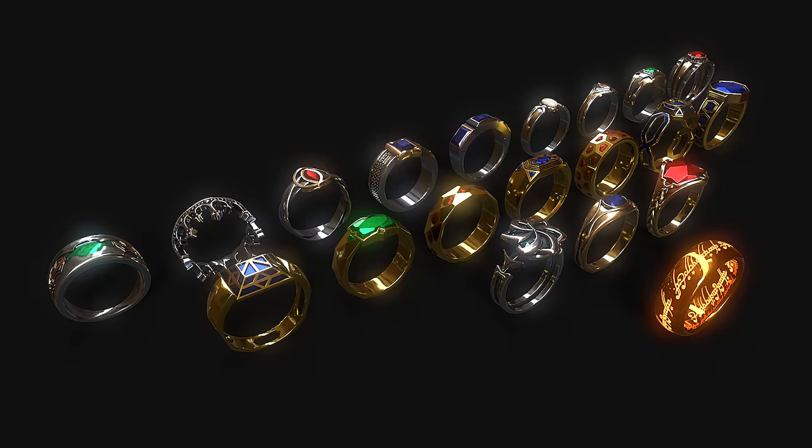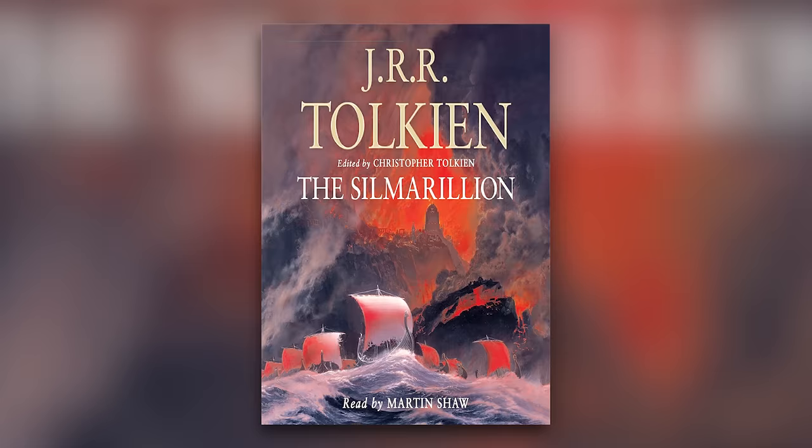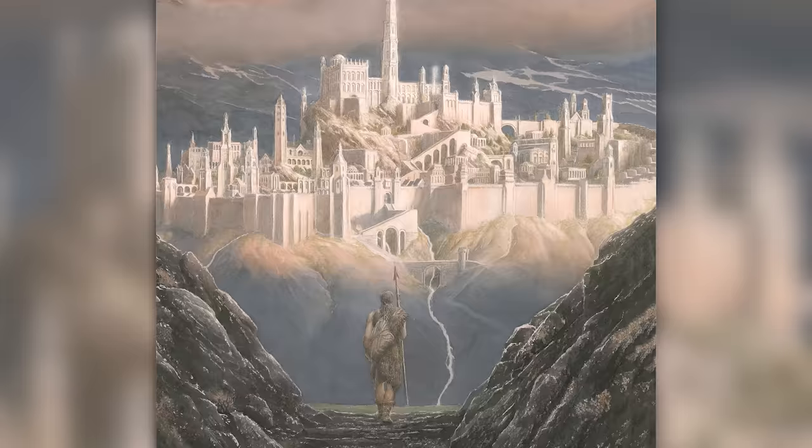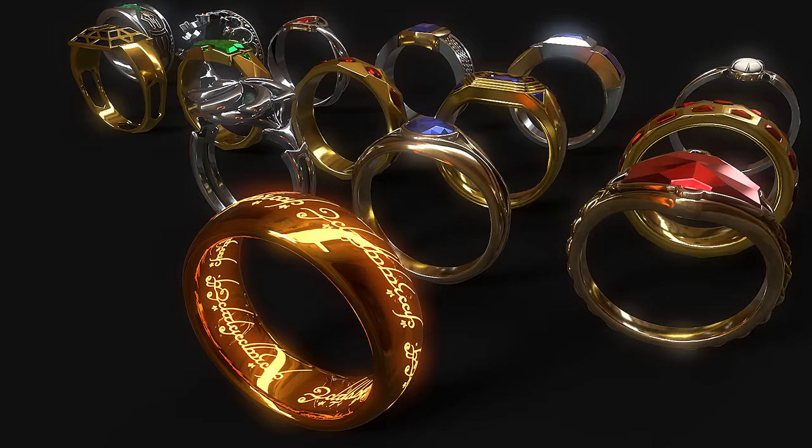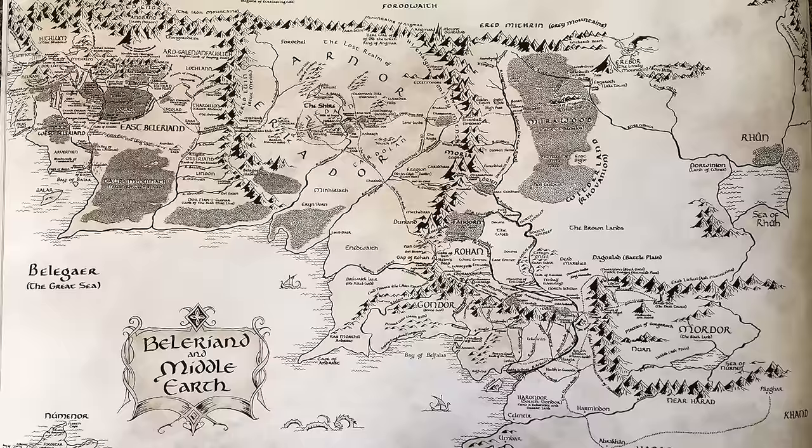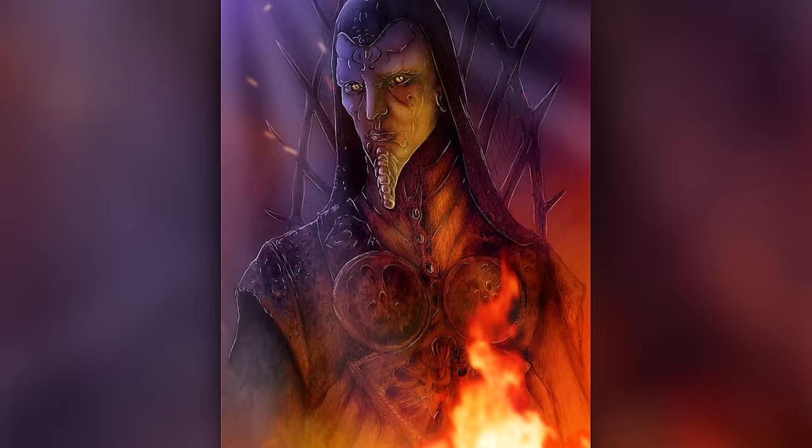So Sauron's One Ring is without a doubt the most infamous, but what about the 19 lesser rings? Where did they come from and what power do they wield? We're gonna look at Tolkien's writings to find out. The Silmarillion is the book that gives us a lot of the backstory for the origins of Middle-earth and the rings themselves. They're addressed in other writings from Tolkien as well, but the Silmarillion is where we find the bulk of it.